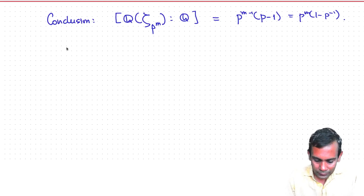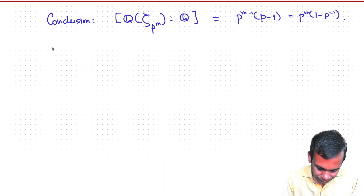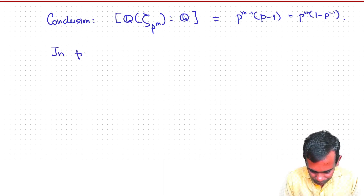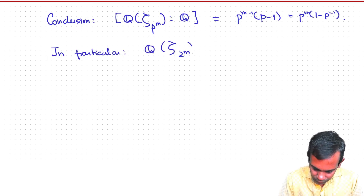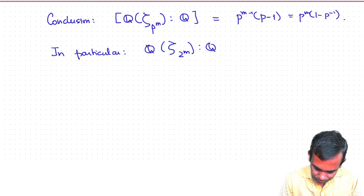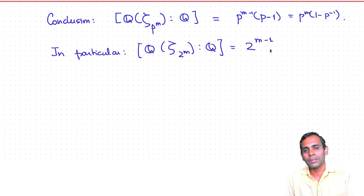So the degree of the field extension generated by the p^m-th root of unity over ℚ is (p − 1)·p^(m−1). In particular, if you take powers of 2, the (p − 1) part goes away and you just get 2^(m−1).